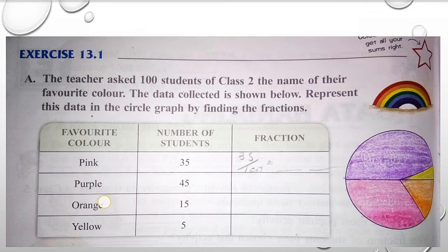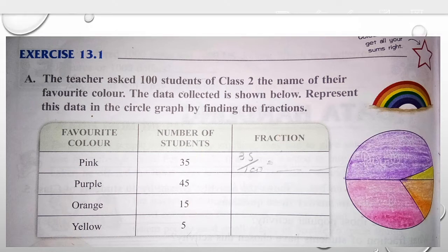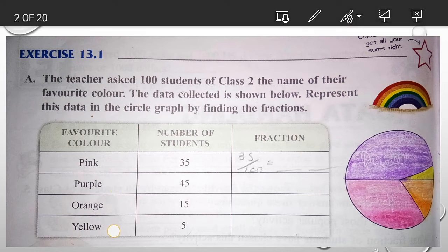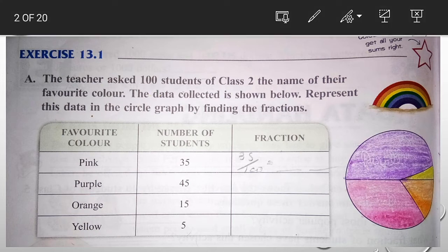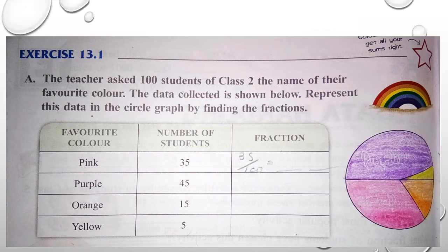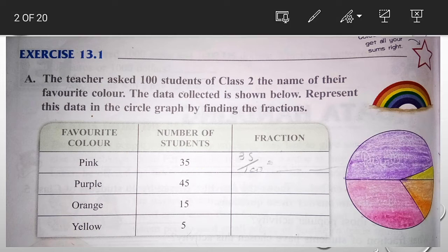This is favorite color, here is the number of students, here is the fraction that we have to find. Here is the color, pink, purple, orange, and yellow. The teacher asked the class of 100 students about which color is their favorite. So this is how it is.